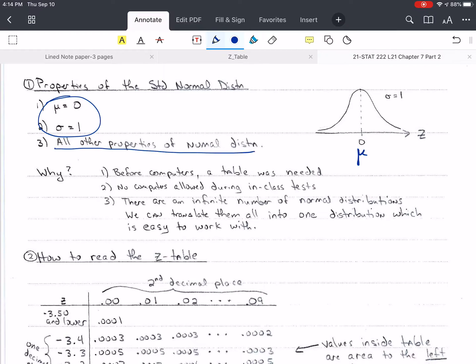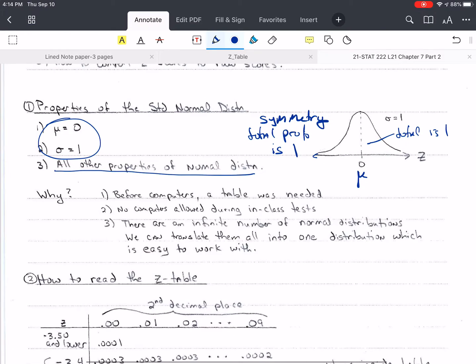So we have all the other properties of the normal distribution. That includes symmetry. Remember that each half is identical except flipped. They're mirror images of each other. The total probability is one. That's the total probability or area under the curve. Remember that this goes all the way to negative infinity and all the way to positive infinity, and this line here never touches the x-axis. So why do we use the standard normal?